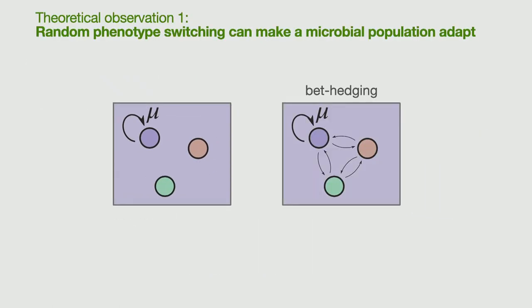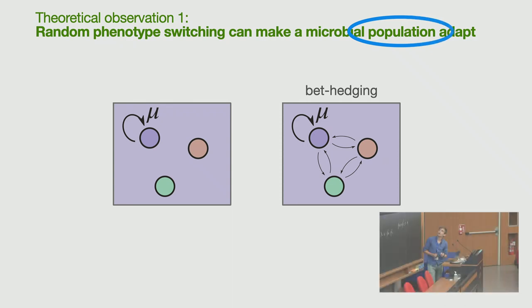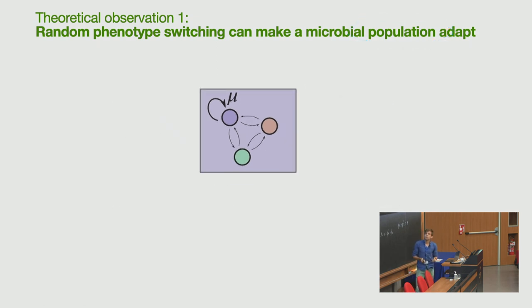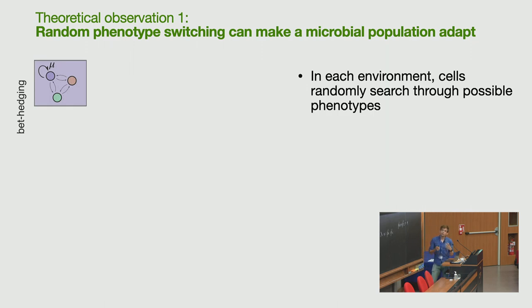So let's first recap what they do. So I extend this model where I have these three phenotypes with random switching rates between these phenotypes, indicated by the arrows in between the circles. Cells can just randomly sometimes switch from phenotype to phenotype. And what does this do to your adaptation? One point. What I'm going to show you is that even though the single cells do not have a bias versus going to the right phenotype, because they're switching all the phenotypes at the same rate, they will still adapt on the population level.